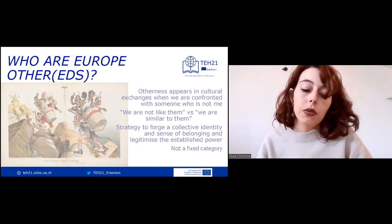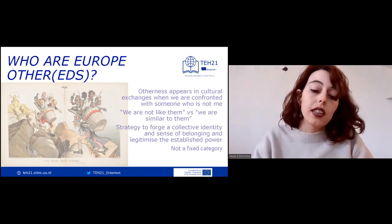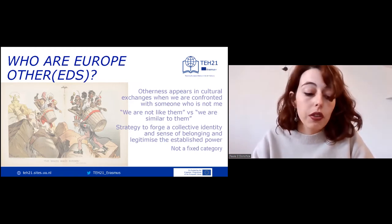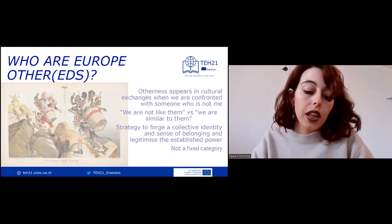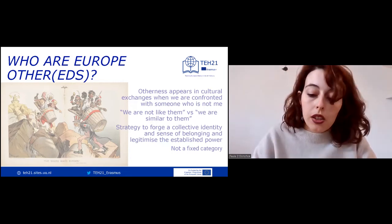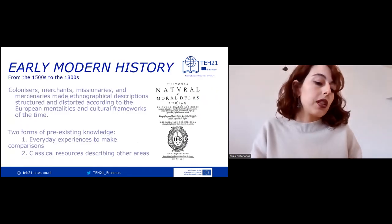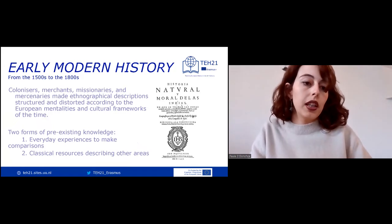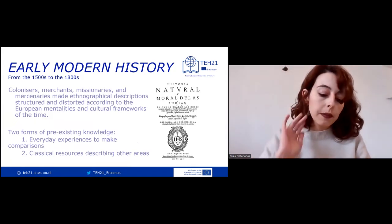The media and channels of dissemination and the context in which these descriptions were produced also played a role. However, it is undeniable that these continuously changing definitions of otherness played an important part in creating a mirror image of European-ness. We will start going through the conception of the other through early modern history, from the 1500s to the 1800s.